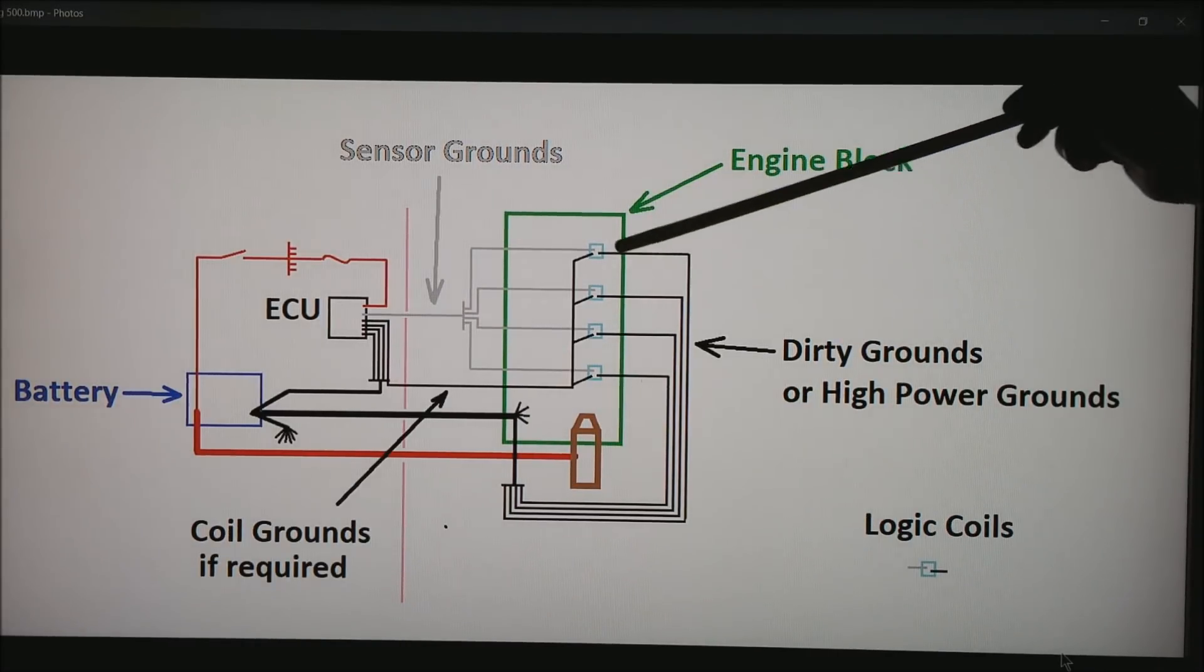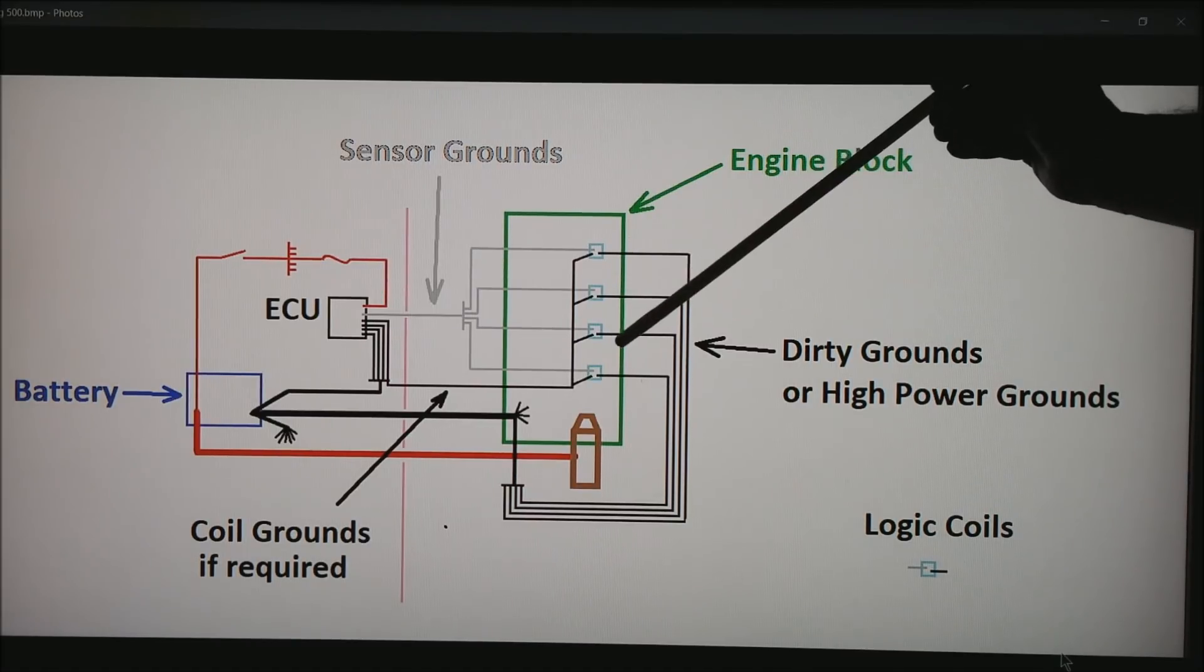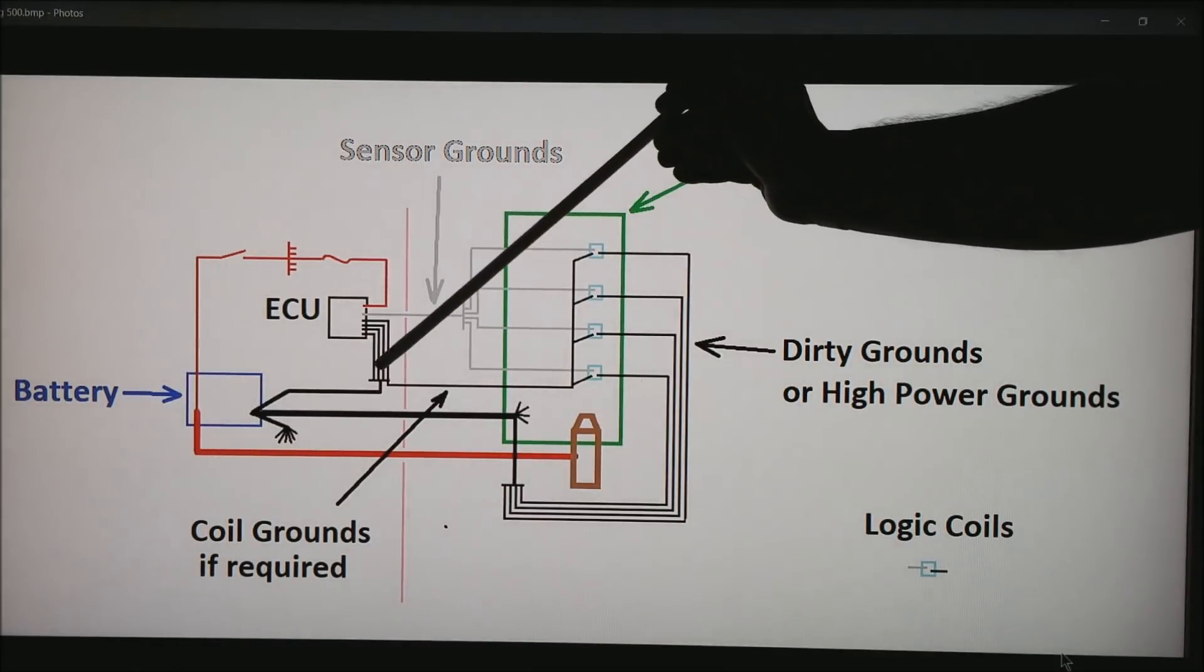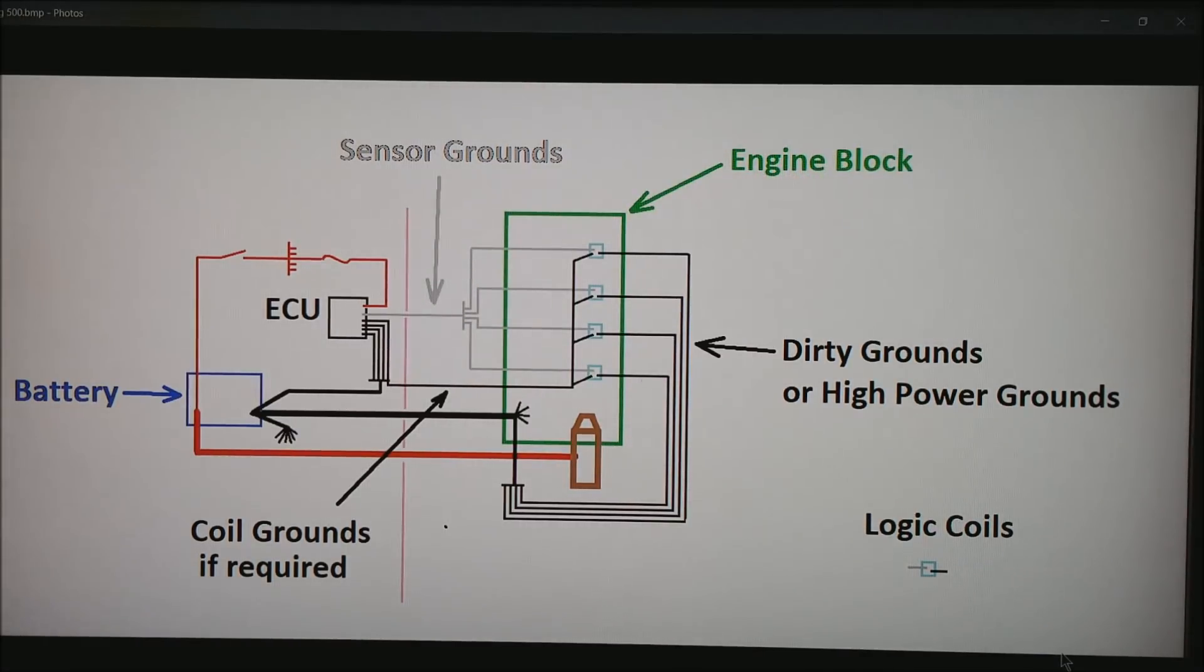We also have on our logic coils running the spark requires by the manufacturer to go all the way back to the battery. So what I've done is drawn in going back to the same block that the ECU is using and then a large wire going back to the battery.